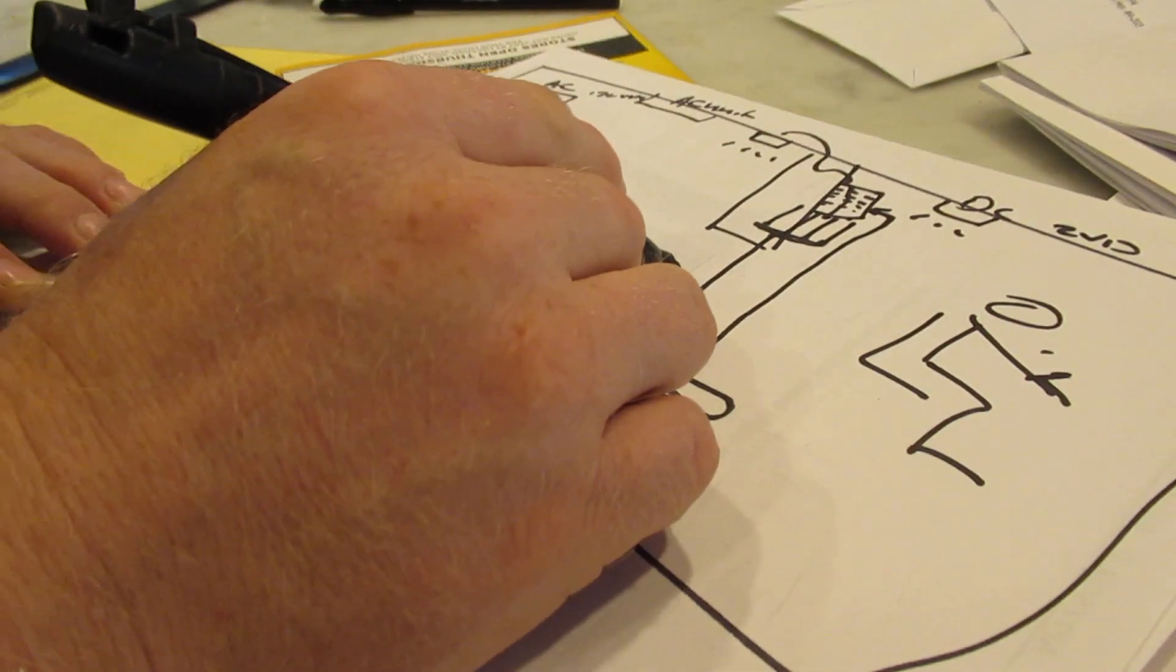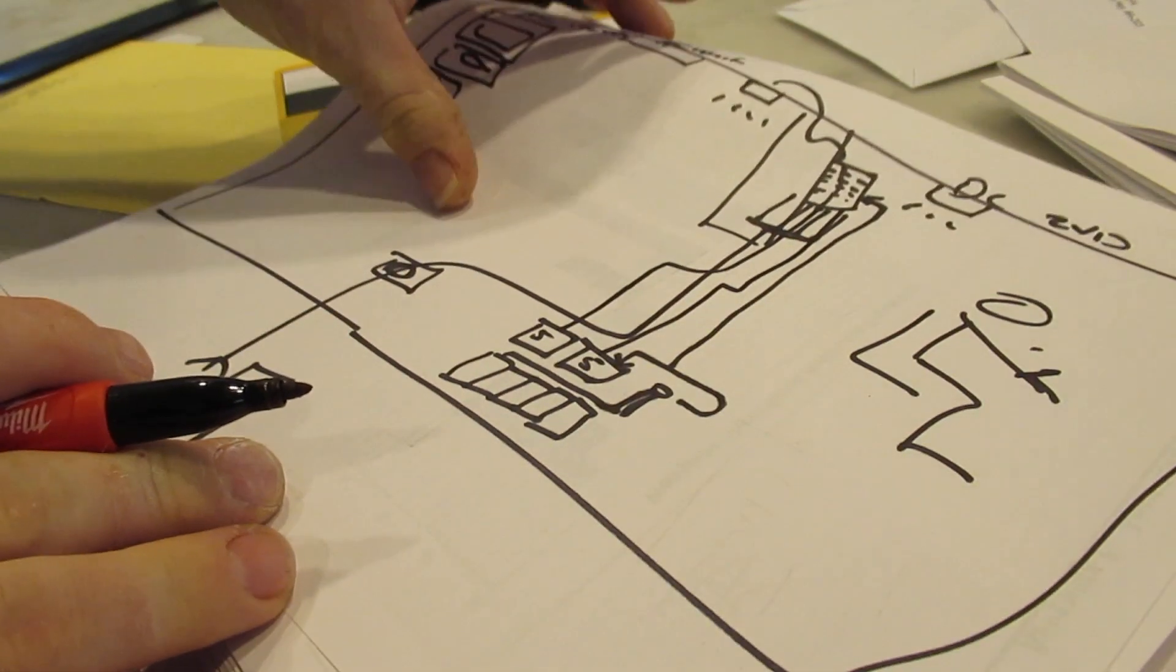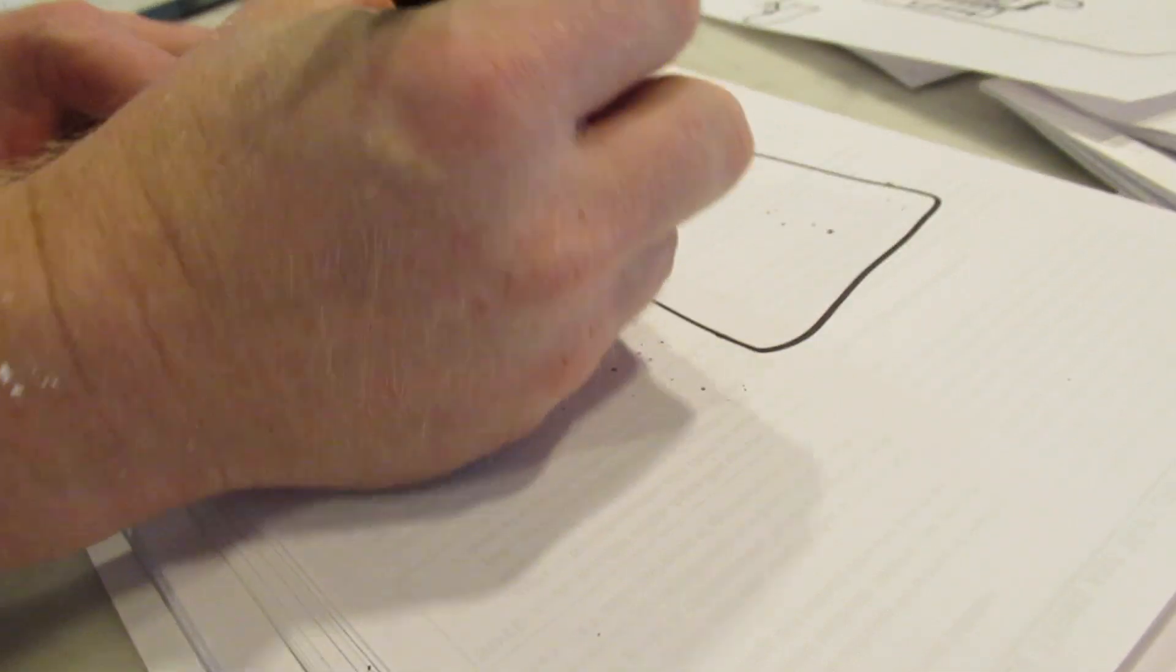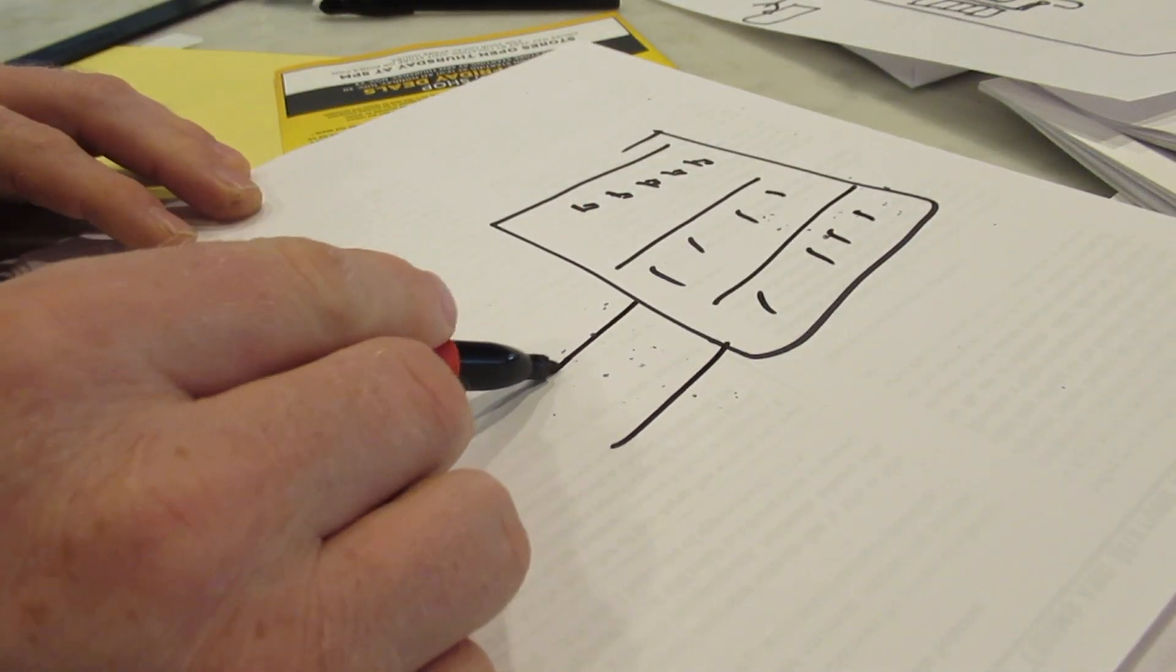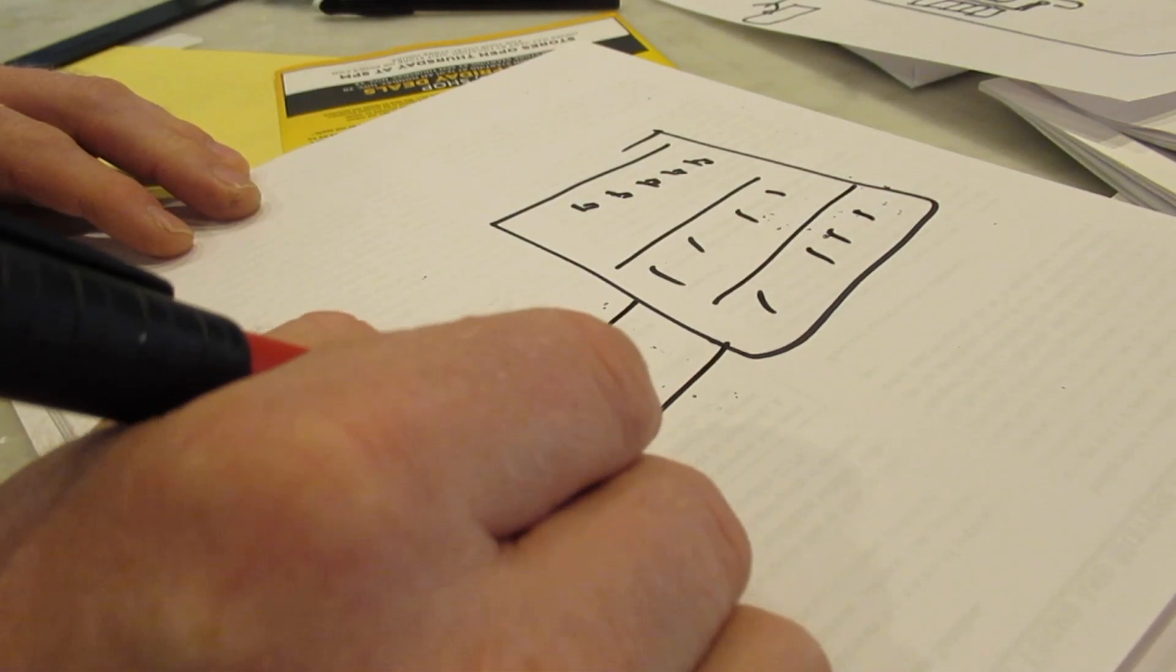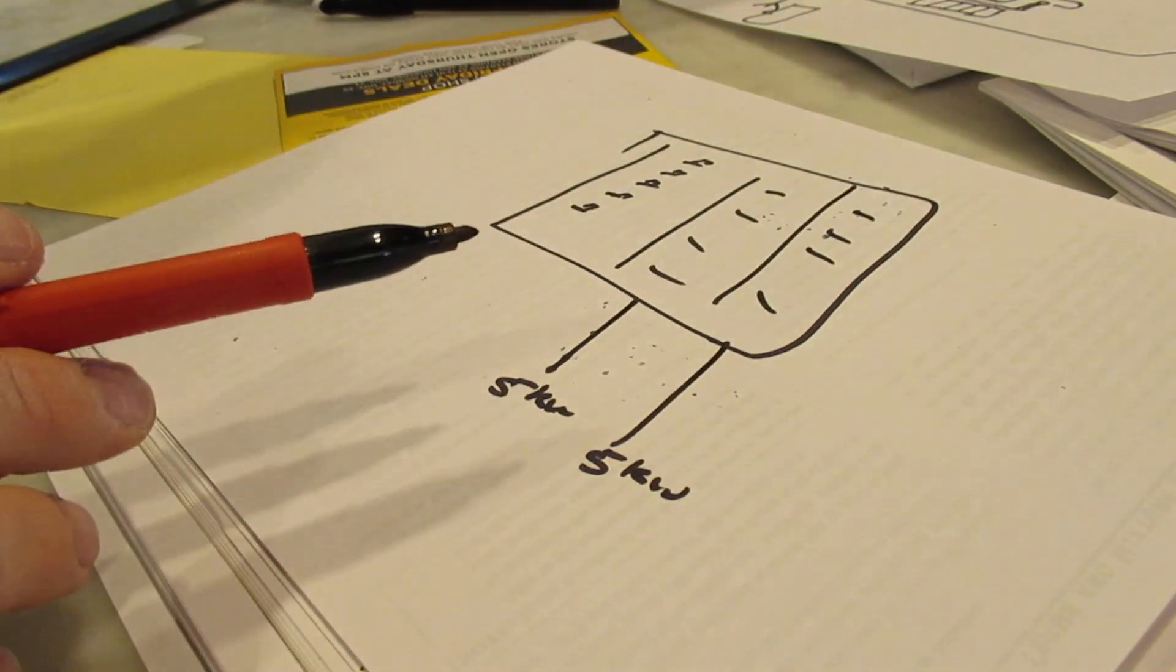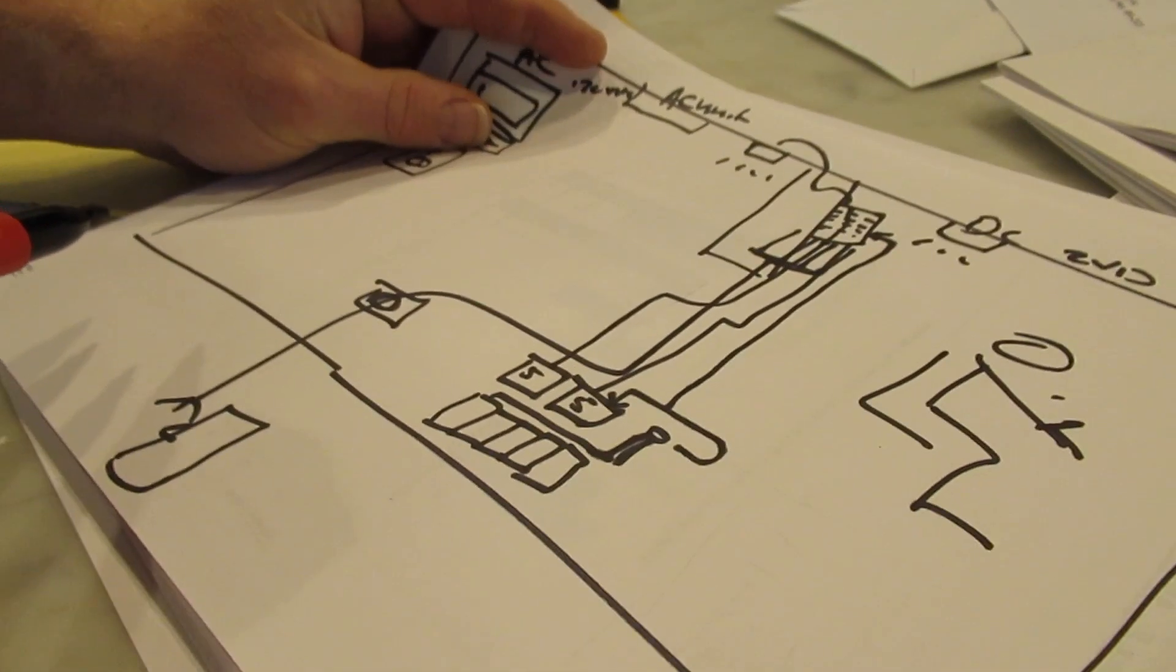So each inverter then runs to its own panel, one of these things with switches. Each one gets its own leg from its own inverter at five kilowatts, which then makes it possible to run all of the systems in the entire bus at the same time off of the batteries.